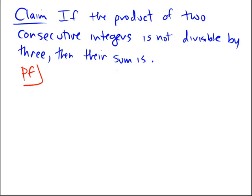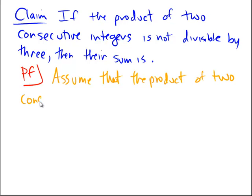So to begin this proof, let's assume that the product of two consecutive integers is not divisible by 3.